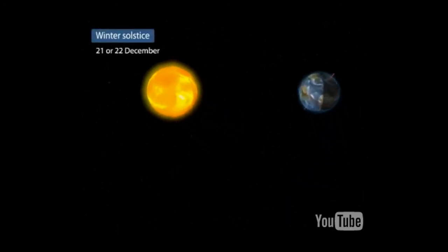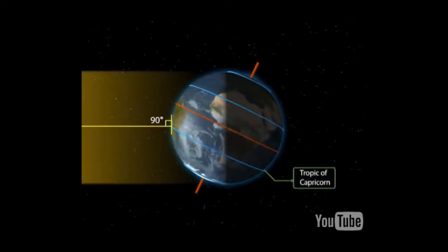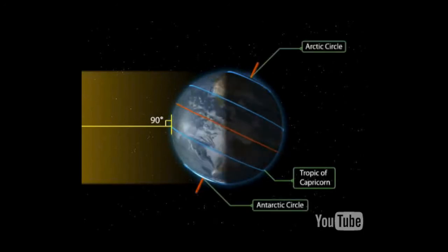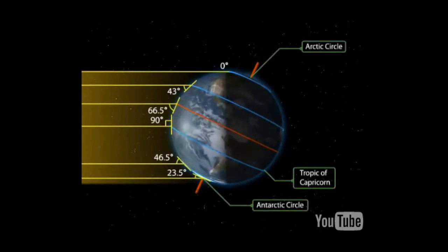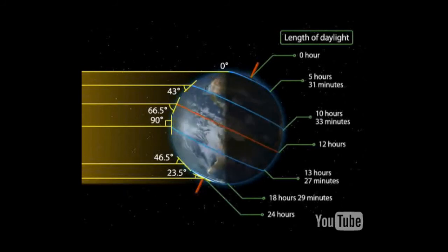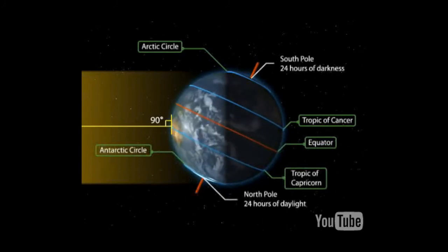At the winter solstice on the 21st or 22nd of December, the overhead sun is over the Tropic of Capricorn, which receives the largest amount of solar radiation. The northern hemisphere is in the winter solstice while the southern hemisphere is in the summer solstice. The angle of the sun decreases towards the poles. The length of daytime in the northern hemisphere is the shortest in the year, while that of the southern hemisphere is the longest. There are 24 hours of darkness at the Arctic Circle and 24 hours of daylight at the Antarctic Circle.